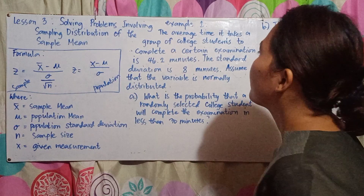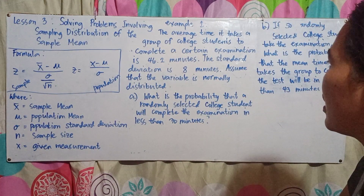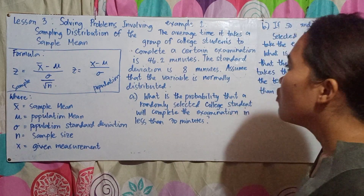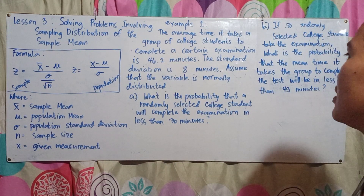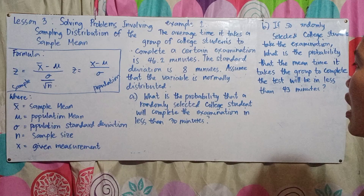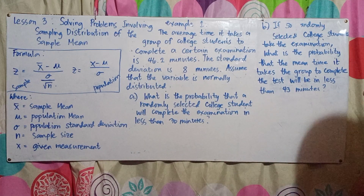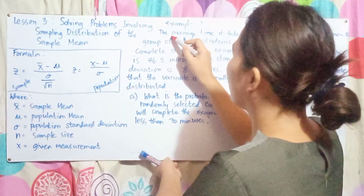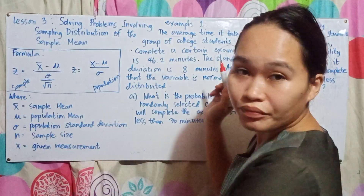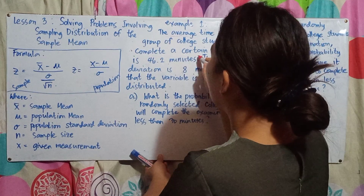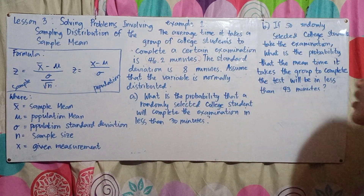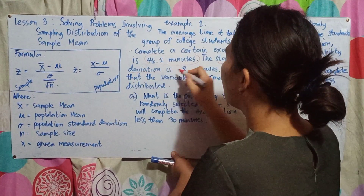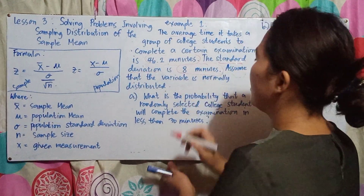Example 1: The average time it takes a group of college students to complete a certain examination is 46.2 minutes. The standard deviation is 8 minutes. Assume that the variable is normally distributed. So the given average or mean is 46.2 minutes, and the given standard deviation is 8 minutes.